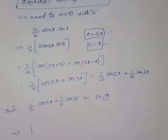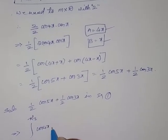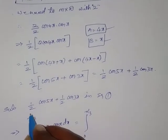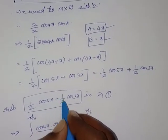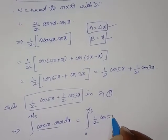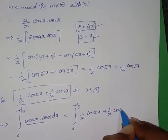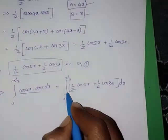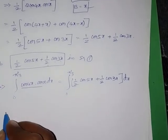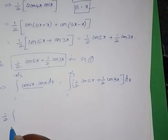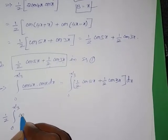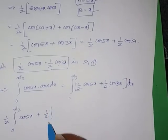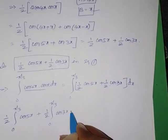So equation 1 becomes: integral from 0 to π/3 of cos(4x)·cos(x) dx = integral from 0 to π/3 of [(1/2)·cos(5x) + (1/2)·cos(3x)] dx. Now split into two integrals. Since 1/2 is a constant, take it outside: (1/2)·∫₀^(π/3) cos(5x) dx + (1/2)·∫₀^(π/3) cos(3x) dx.